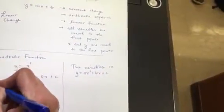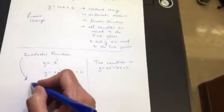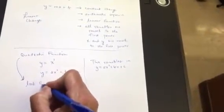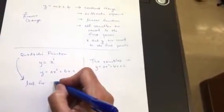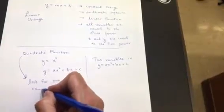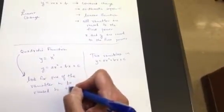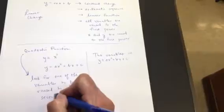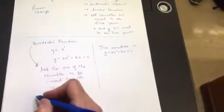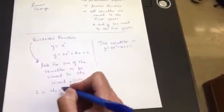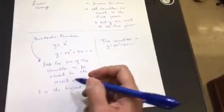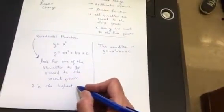What identifies something as quadratic? Let's put a little arrow there. Quadratic, look for one of the variables to be raised to the second power. In fact, two is the highest exponent that shows up, and all the exponents are positive integers. Two is the highest exponent. That makes something quadratic.